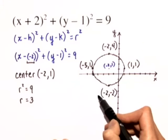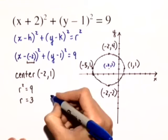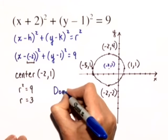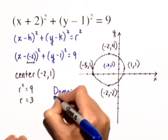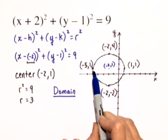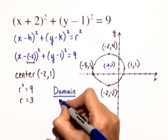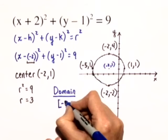The reason that I'm plotting those ordered pairs is because it will help me determine the domain and the range. The domain are the values that x can take on. And we can see that x can take on values anywhere as far left as an x value of negative 5, including negative 5.